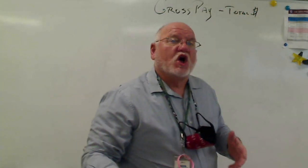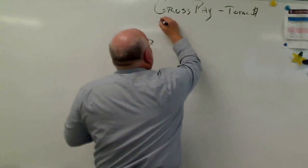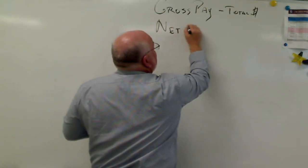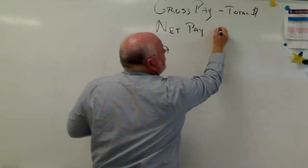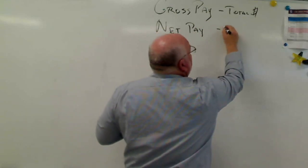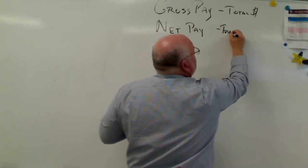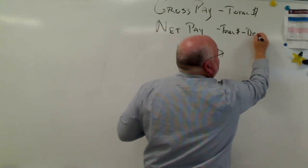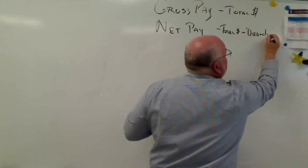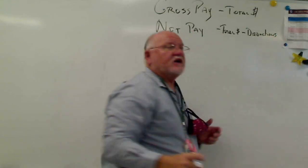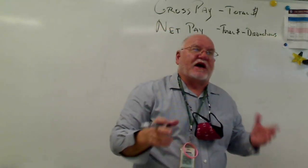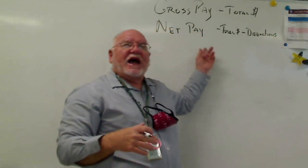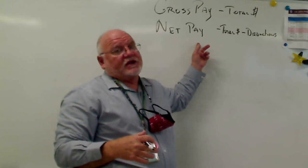Now we have this thing called net pay. And so when it comes to net pay, what we're looking at here is total dollars minus our deductions. And deductions are things that the government takes out and other things like that. And that's what always throws us off because we don't think about those.